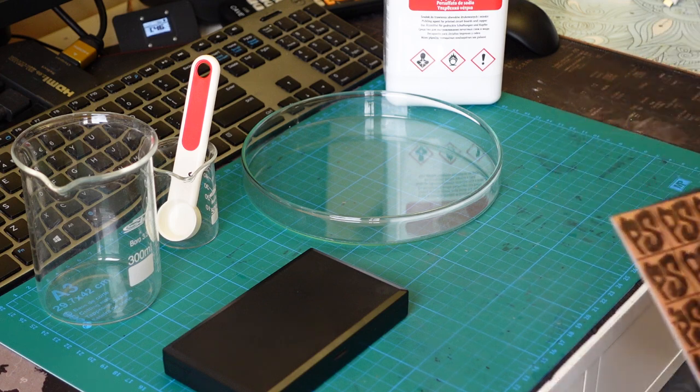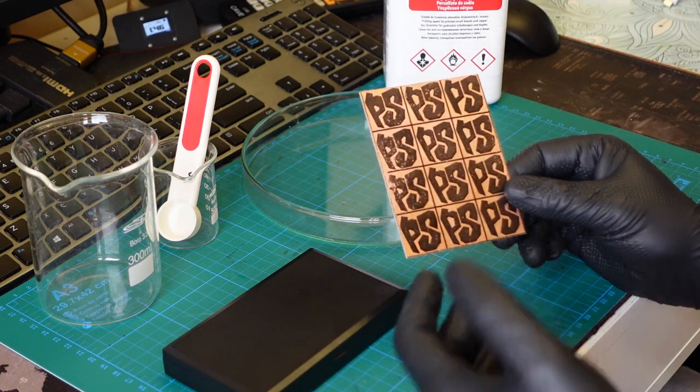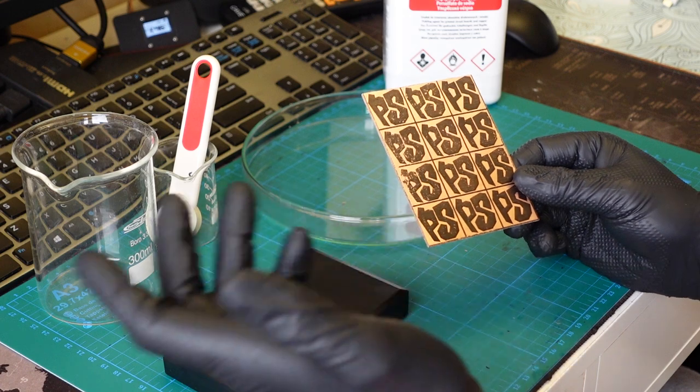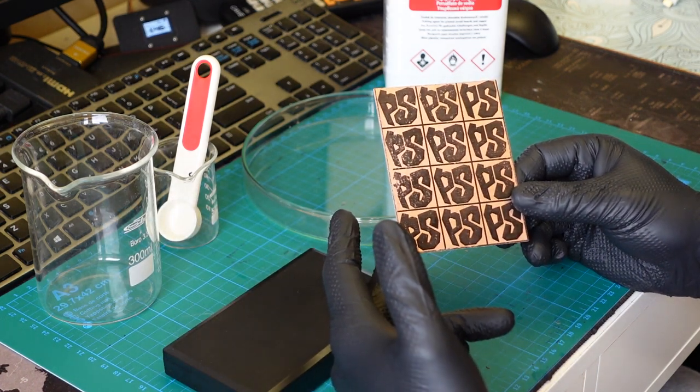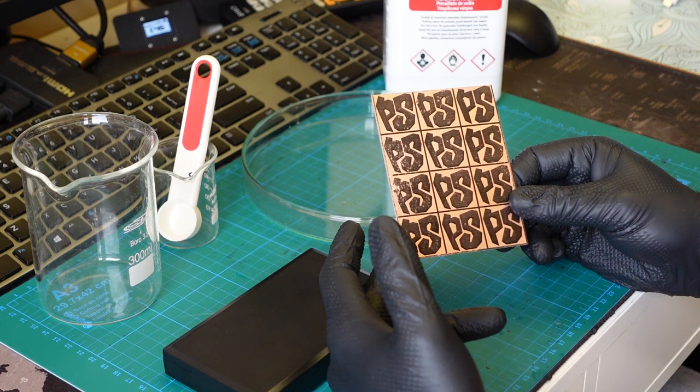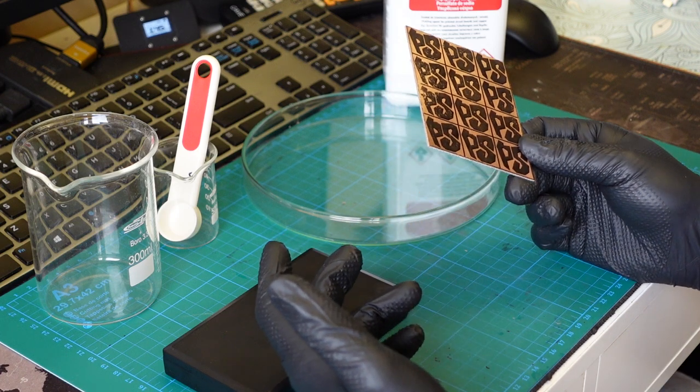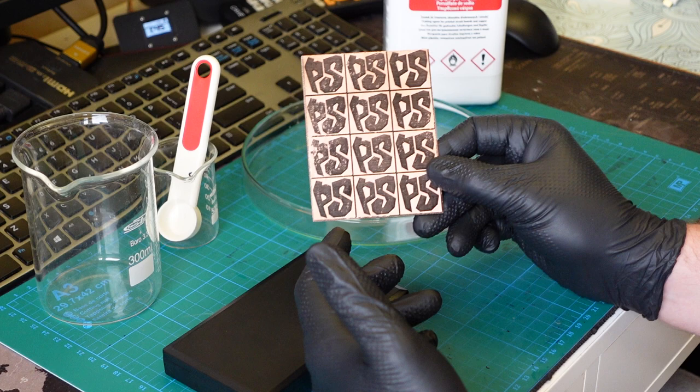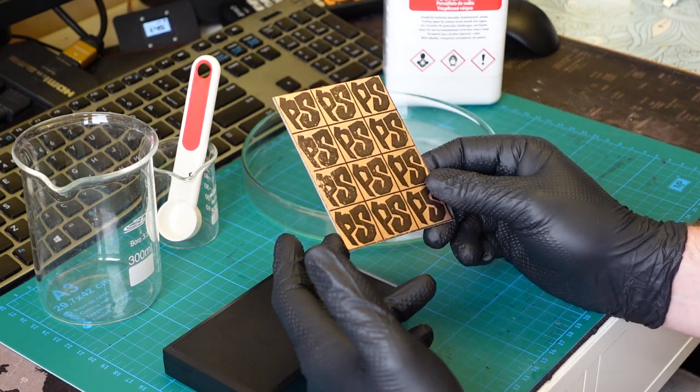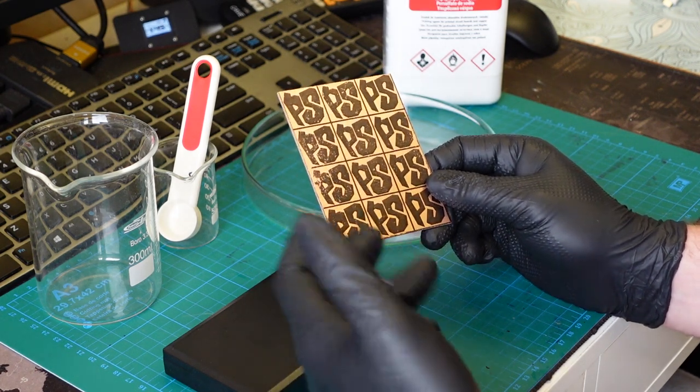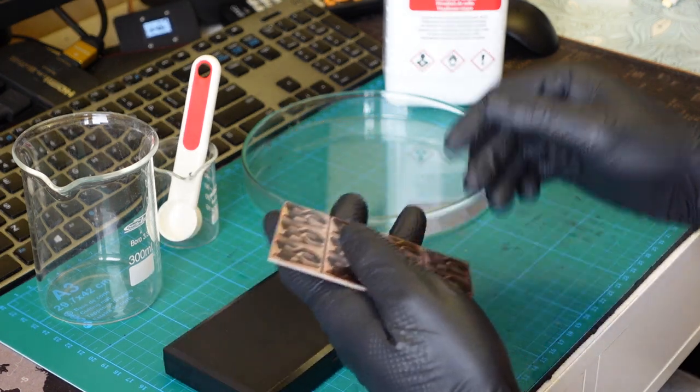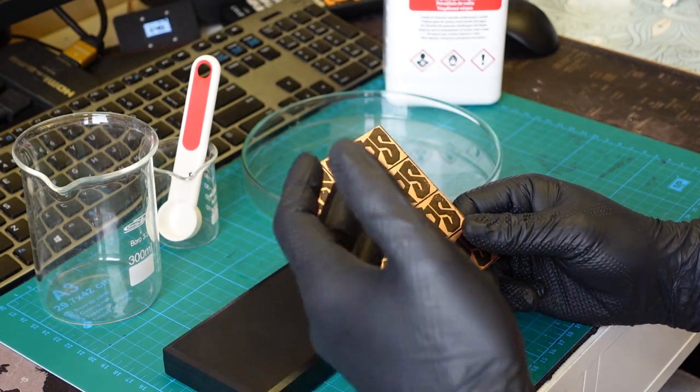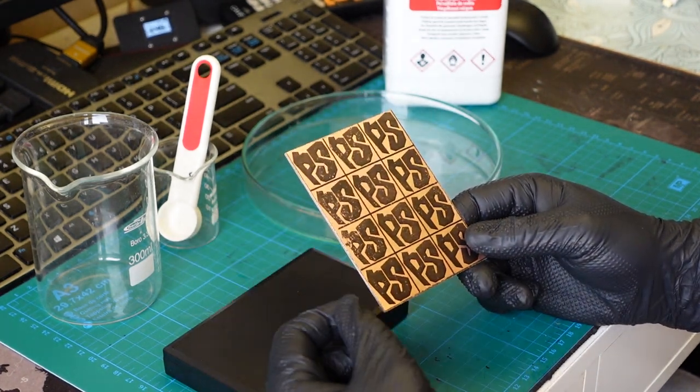To start off, first of all you need a PCB. Without this the rest doesn't really do anything. Here I'm using a thermo transfer method which is cheap and accessible. As long as you have access to a laser printer, you can buy laminated paper that you print on and then you iron it or press it with pressure and temperature and it transfers the toner.